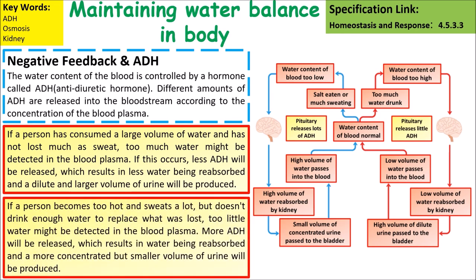If a person becomes too hot and sweats a lot but does not drink enough water to replace what is lost, too little water might be detected in the blood plasma. More ADH will be released, which results in more water being reabsorbed, and you end up with more concentrated urine with less water in it.